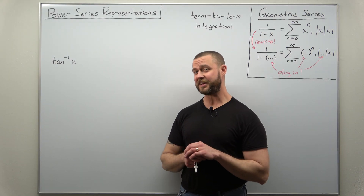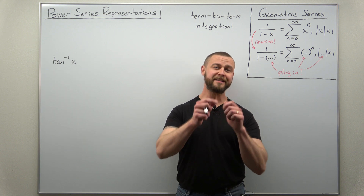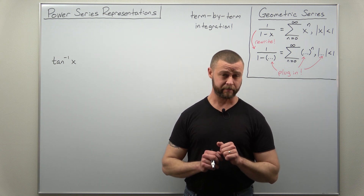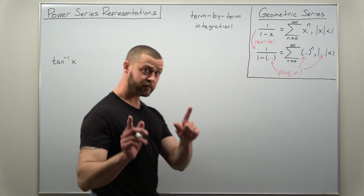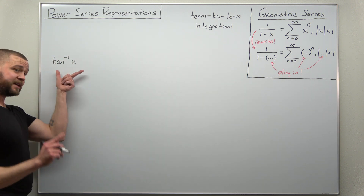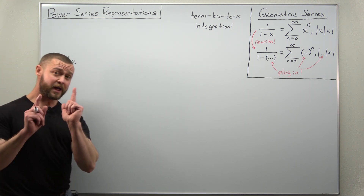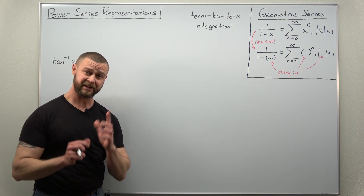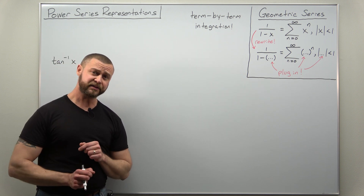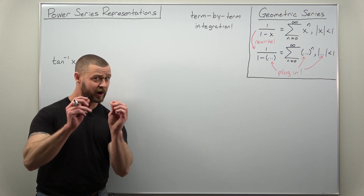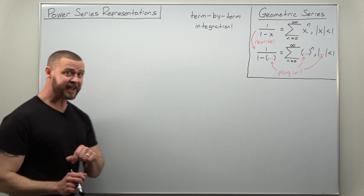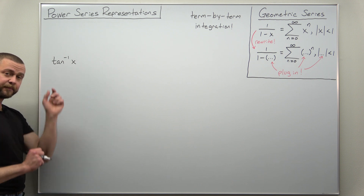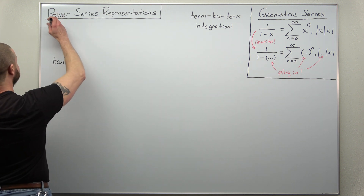Greetings fellow mathematicians. We're going to take a look at another problem using term-by-term integration. The connection from the function we're given — inverse tangent of x — to a simple function with a known power series representation is not quite as simple. We're actually going to use a basic antiderivative which gives inverse tangent of x. So let's identify that first.